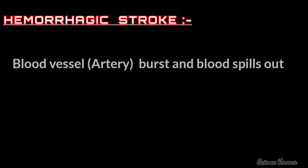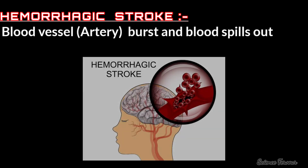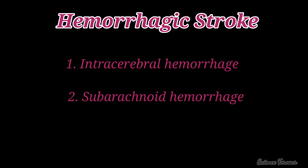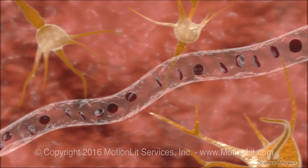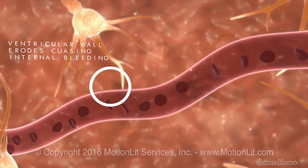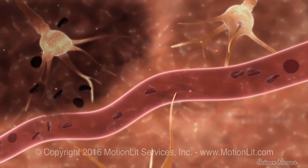Now we will see the third type: hemorrhagic stroke. Hemorrhagic stroke happens when a blood vessel in the brain bursts and spills blood into or around the brain. There are two types: intracerebral hemorrhage and subarachnoid hemorrhage. Intracerebral hemorrhage is caused when a burst blood vessel bleeds into brain tissue, causing brain cells to die and the affected part of the brain to stop working correctly.